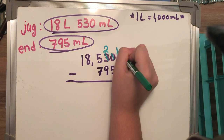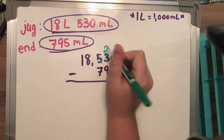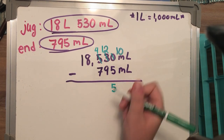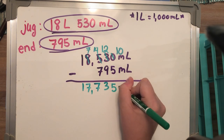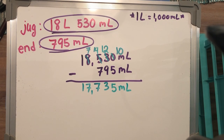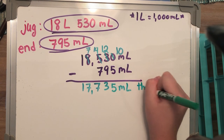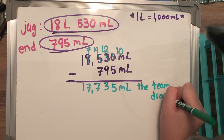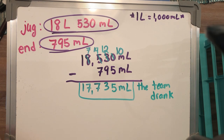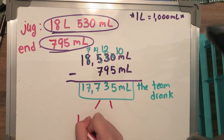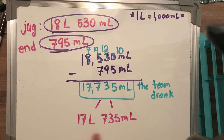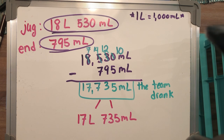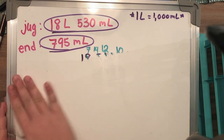Since 1 liter is worth 1,000 milliliters, I convert 18 liters 530 milliliters into 18,530 mL and subtract 795 mL, because that's how much was left at the end. After regrouping and subtracting, I get 17,735 milliliters of water the team drank. Breaking that down into smaller units gives 17 liters and 735 milliliters. So altogether the team drank 17,735 milliliters — thirsty football players!